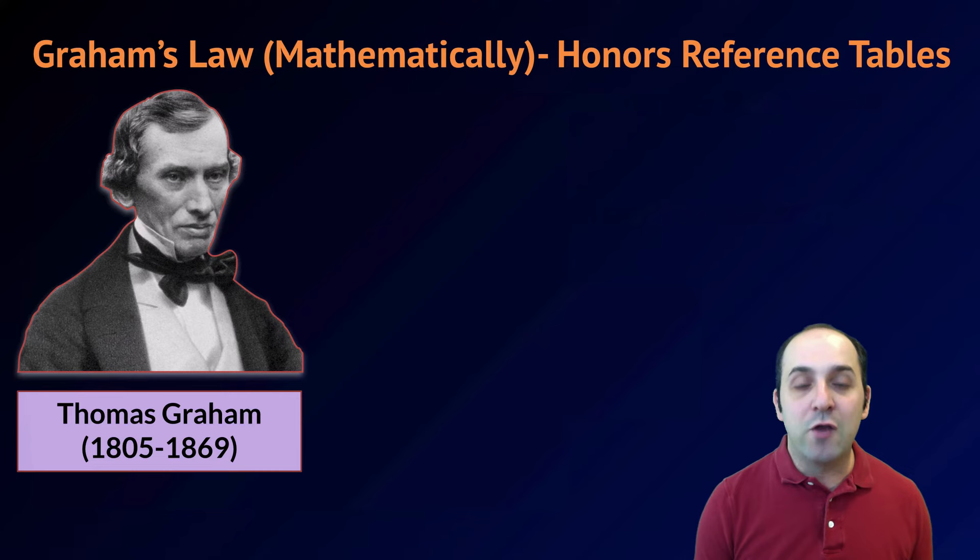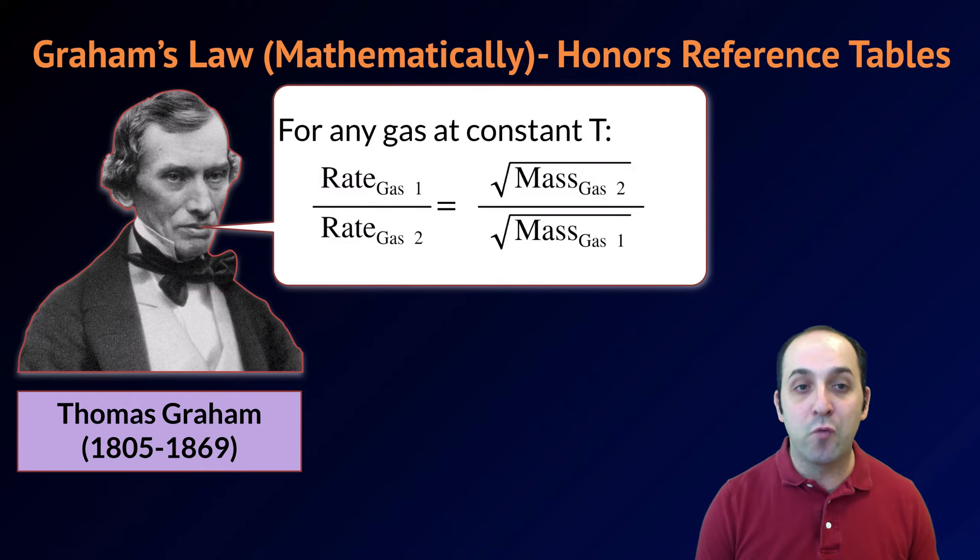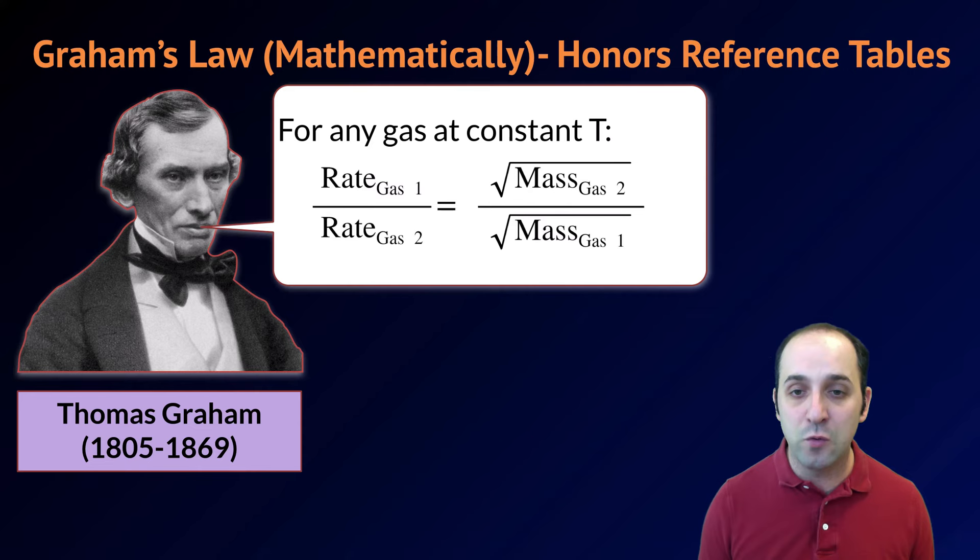Mathematically, Graham's Law is expressed on your honors reference tables as follows. For any gas at a constant temperature, the rate of effusion of the first gas divided by the rate of effusion of the second gas — that ratio — is equal to the square root of the mass of gas two divided by the square root of the mass of gas one.